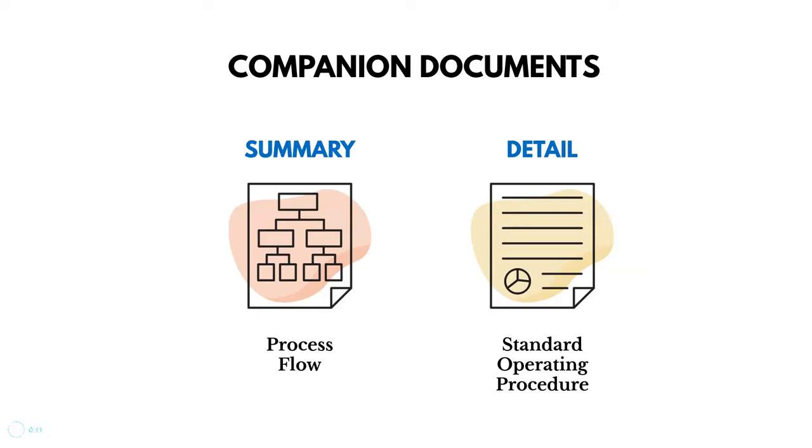And so oftentimes you'll take a process flow diagram and put it into what's called a standard operating procedure, which provides you more information about the background of the process, why it's needed, and then specific or more detailed steps, references to other documentation or templates that are needed. That could be included in the standard operating procedure. Those two things can go together.